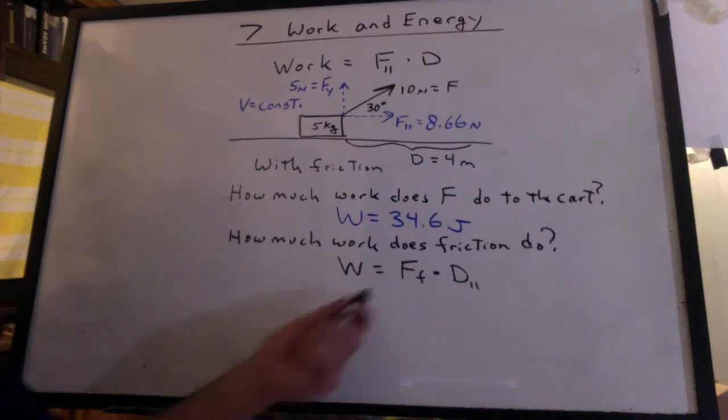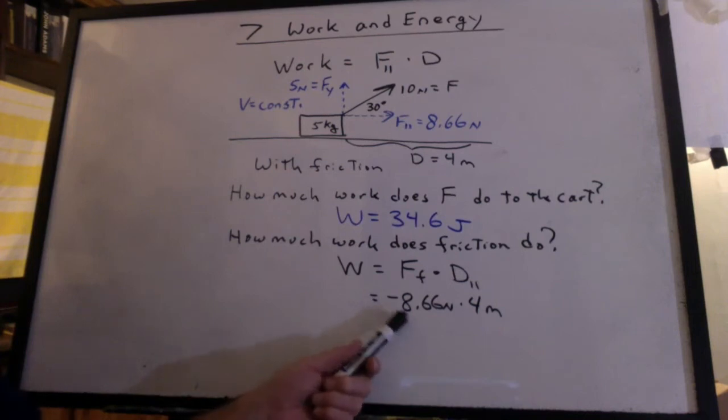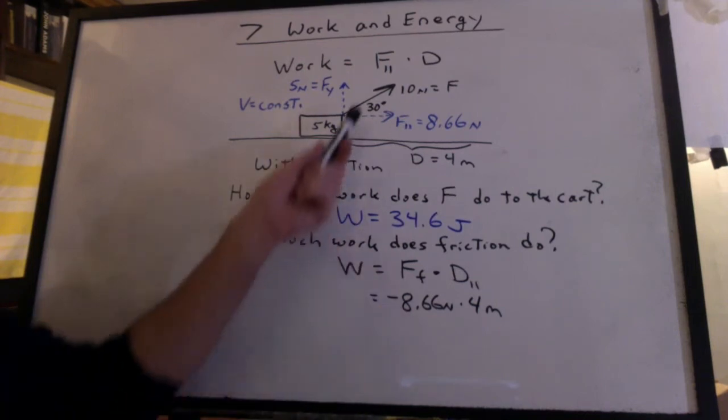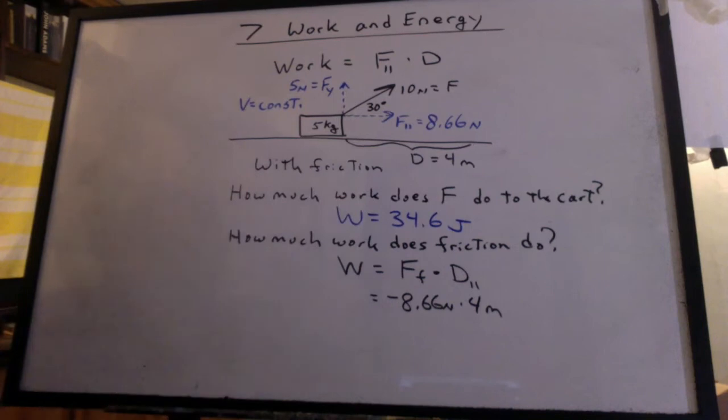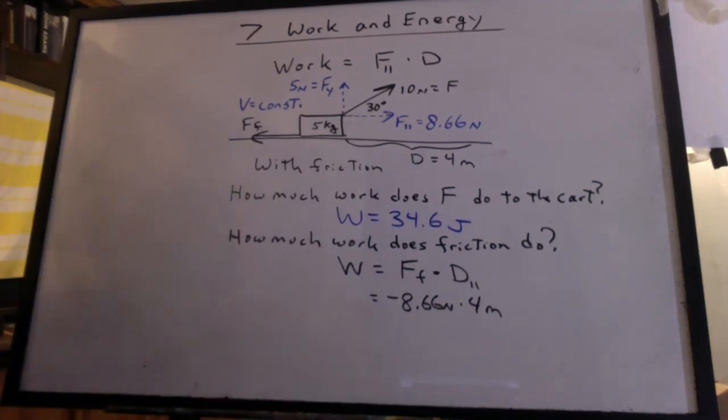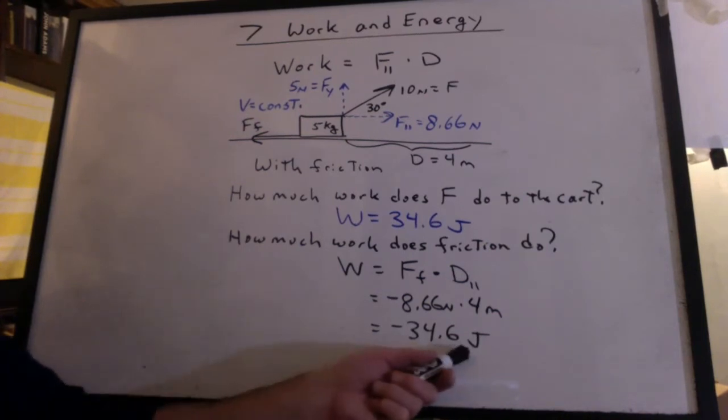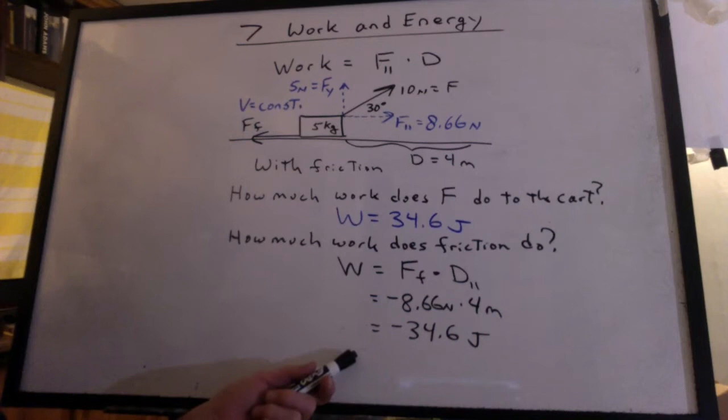Work done by friction is the force of friction times a parallel distance. The force of friction is negative, and it's equal to the parallel component of F because we're moving at a constant velocity. It's backwards. That's why it's negative. Friction does negative 34.6 joules, or we would say we generated 34.6 joules of waste heat.